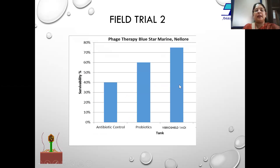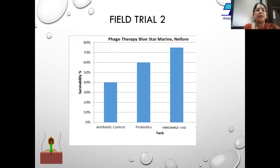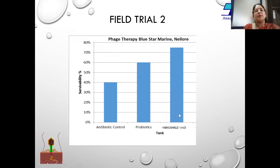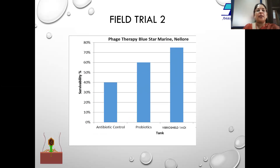This is another field trial comparing antibiotics, probiotics, and bacteriophages. In this study, antibiotics failed to control the vibrios and survival was only 40 percent. Using probiotics, survival was 60 percent. Using Vibrio Shield — the bacteriophage formulation — survival was around 72 percent. This small-scale study was done under controlled conditions.